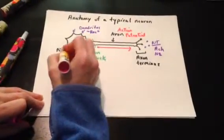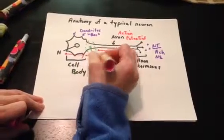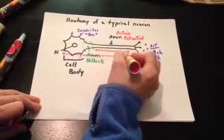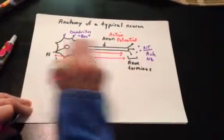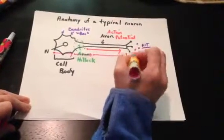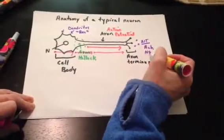It passes the information along the cell body, gets picked up by the hillock, and then picked up by the axon. Information flow goes from left to right, from dendrites to the terminus, where ultimately the neurotransmitter is released.